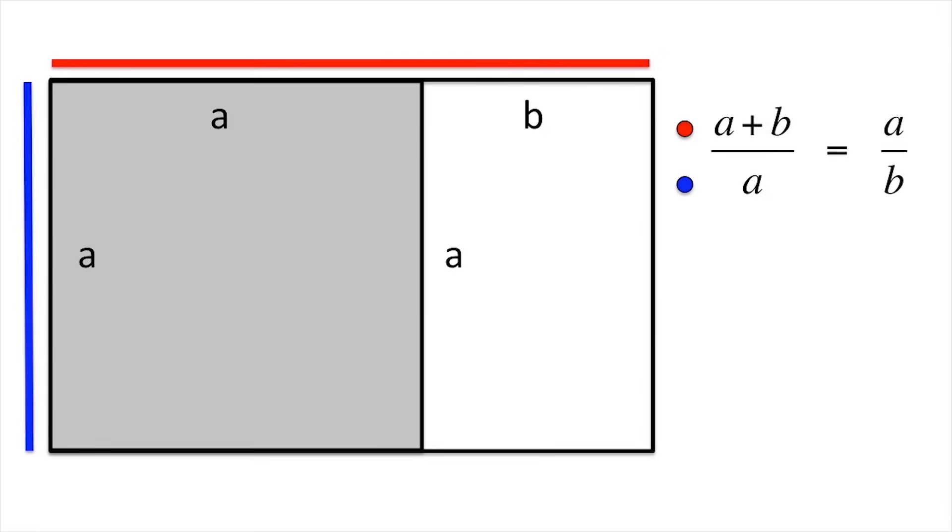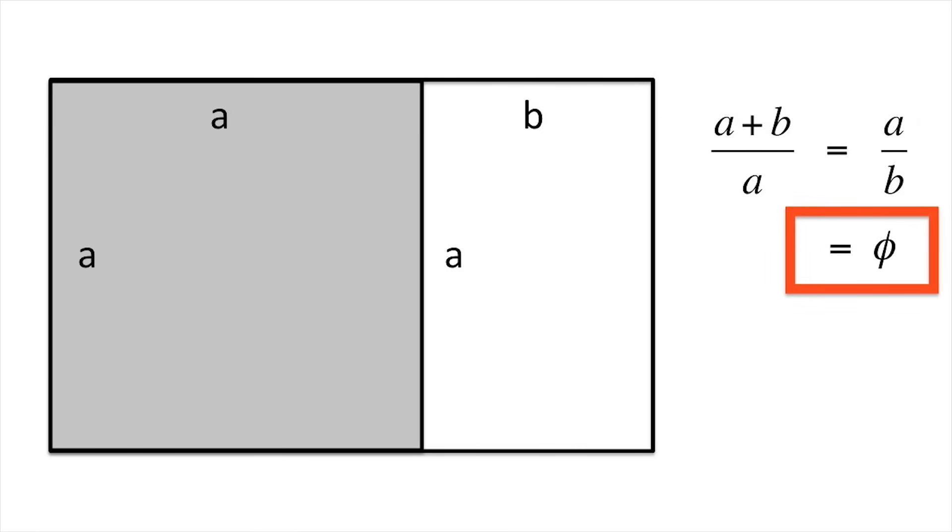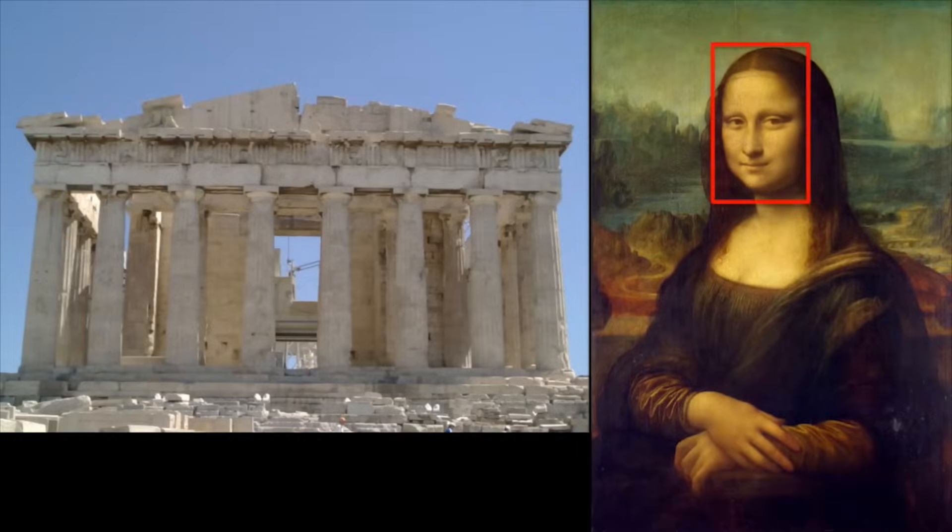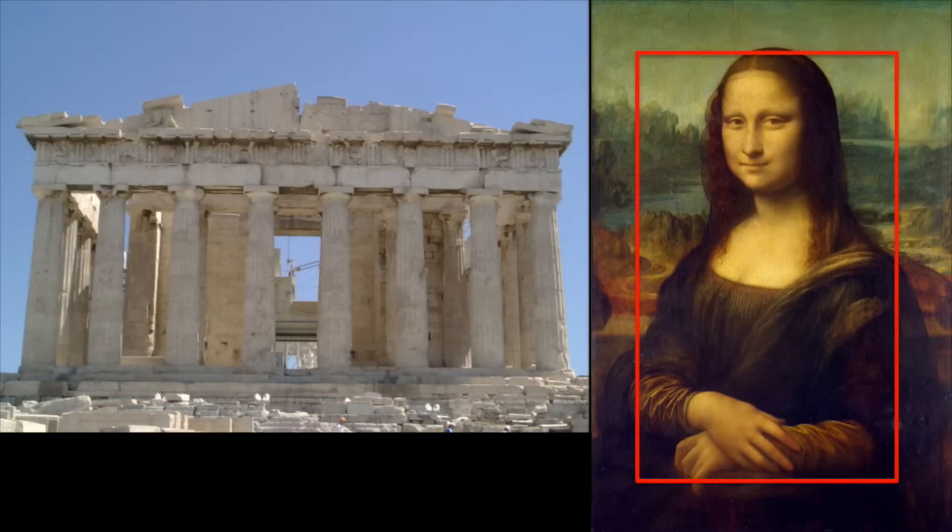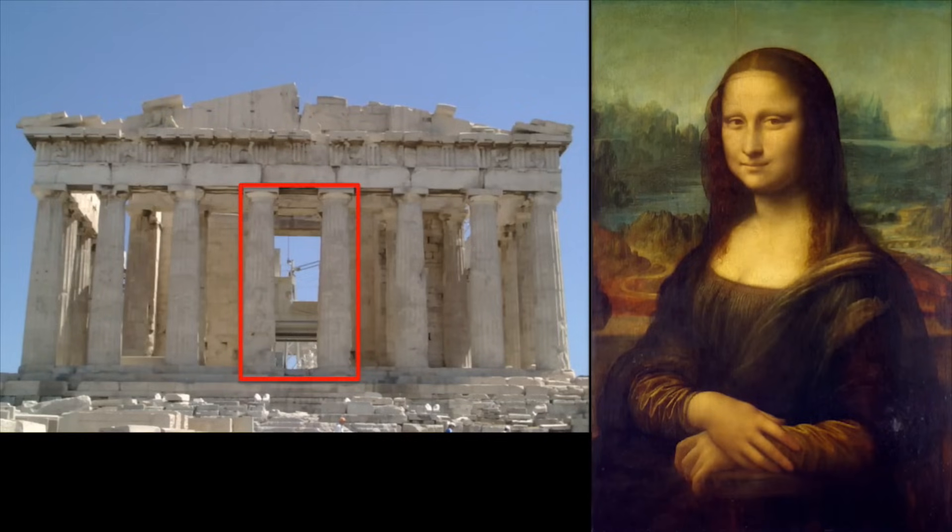That is, A plus B over A equals A over B. This ratio is often represented with the Greek letter Phi. It has been claimed that golden rectangles appear in ancient Greek architecture and some famous artwork, but this is not borne out by measurements.